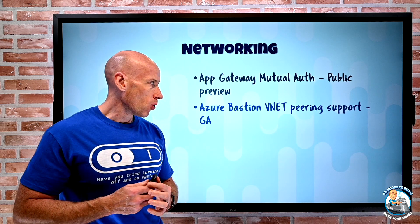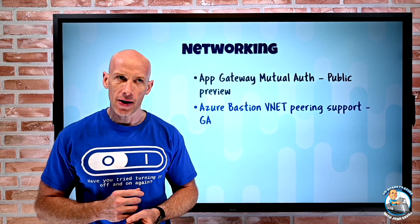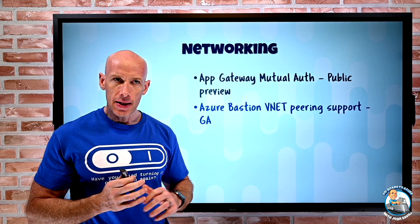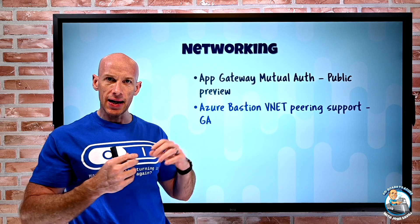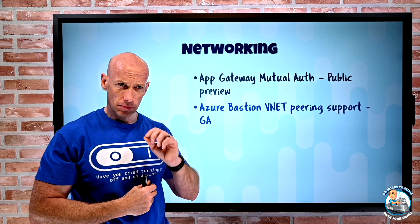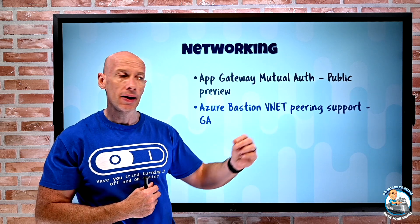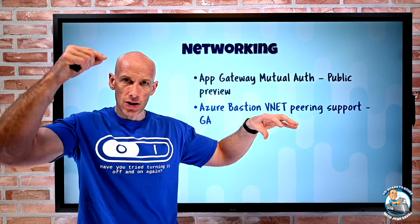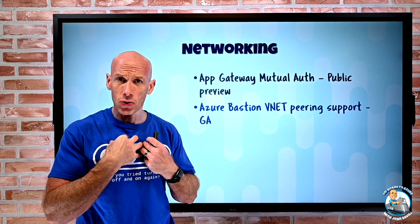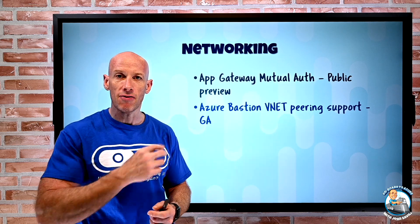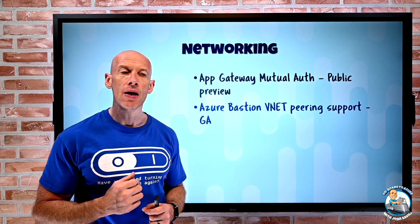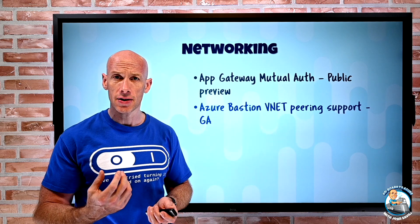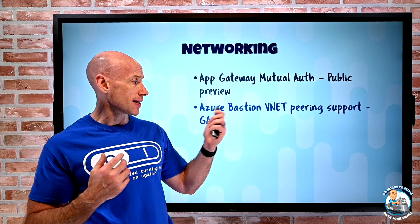Azure Bastion VNet peering support is now GA. Azure Bastion is all about connecting to your virtual machines — Windows or Linux — without exposing public ports to the internet. Previously, you had to define it per virtual network. Now it supports peering, so if I have VMs sitting in a peered virtual network, I can still use the Bastion in my primary virtual network to connect to VMs in peered networks. Instead of having multiple Azure Bastions costing money, I can have one Bastion in my hub network and connect to virtual machines in any of those spoke or peered networks. That is now GA.